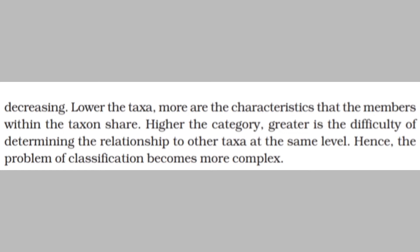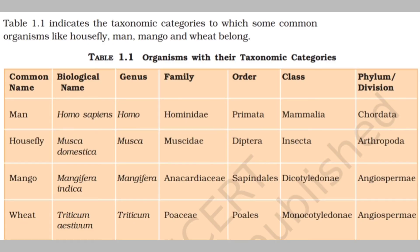In this table, some organisms are given with their different taxonomic categories. For example, Men: biological name Homo sapiens, genus Homo, family Hominidae, order Primata, class Mammalia, phylum Chordata. Similarly for Housefly, Mango, and Wheat, the biological names are Musca domestica, Mangifera indica, and Triticum aestivum. The other categories are also given in this table.